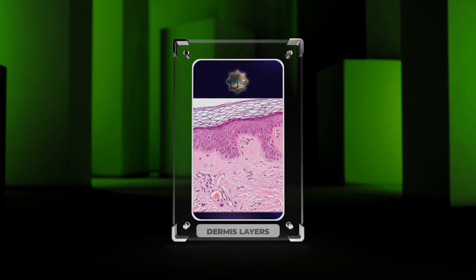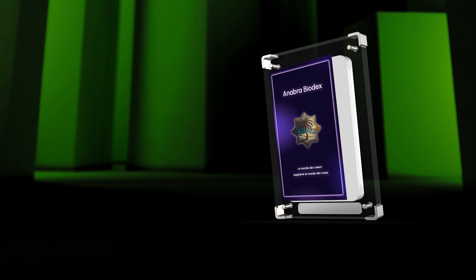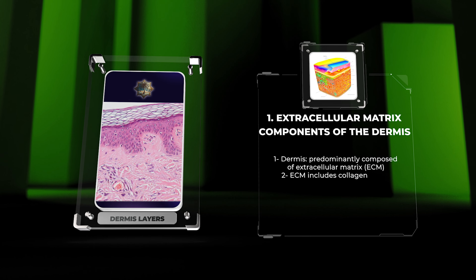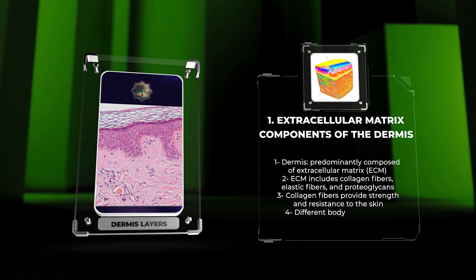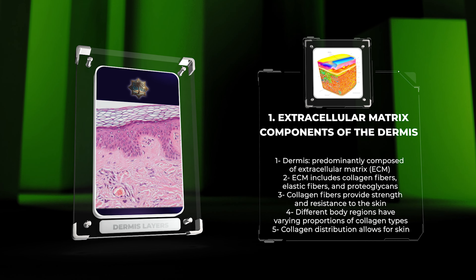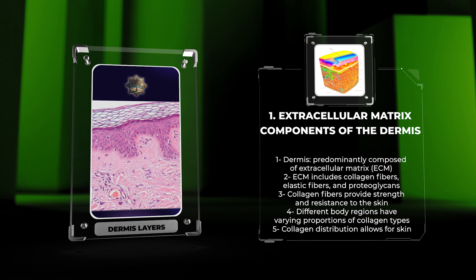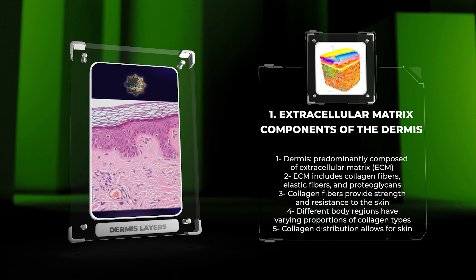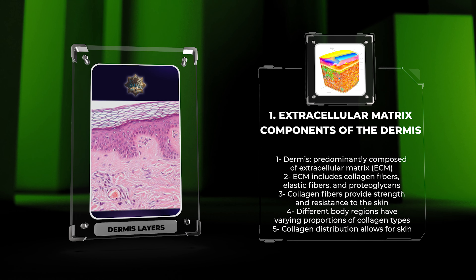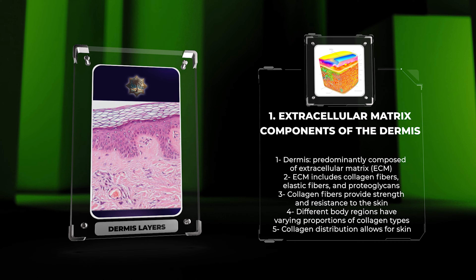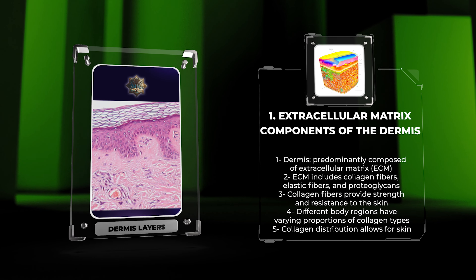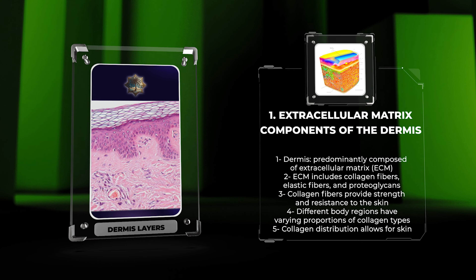The dermis is predominantly composed of an extracellular matrix (ECM) that provides the framework for the skin. The ECM consists of several components including collagen fibers, elastic fibers, and proteoglycans. Collagen fibers are the most abundant component and provide strength and resistance to the skin. Different types of collagen, such as type I, III, and IV, are found in varying proportions in different body regions.